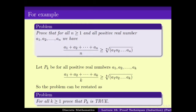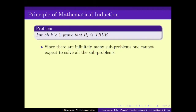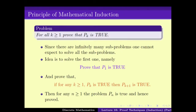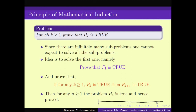Similarly, for the problem of '11 divides 23^n − 1', one can write it as the AND of Pk, where Pk is '11 divides 23^k − 1'. Thirdly, we looked at the AM-GM inequality, where Pk is defined as: the arithmetic mean of k real numbers is greater than or equal to the geometric mean of k real numbers. And you want to prove that for all k, Pk is true. This is the way of splitting the problem into infinitely many subproblems.